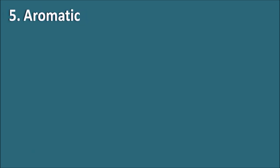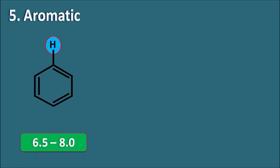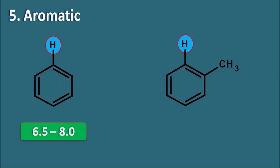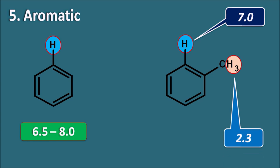Fifth, aromatic protons fall in the range of 6.5 to 8.0 ppm because the aromatic ring system produces a strong deshielding effect due to magnetic anisotropy. For example, in toluene the aromatic ring protons appear at around 7.0 ppm, while the methyl (allylic) protons on the side chain appear at 2.3 ppm — showing a large difference due to the ring's high deshielding effect.